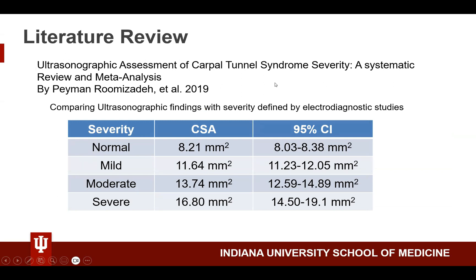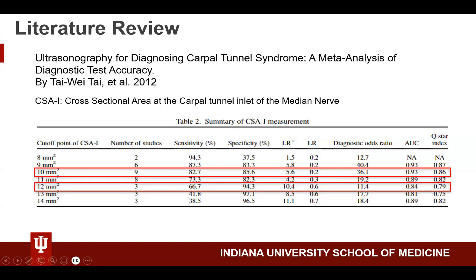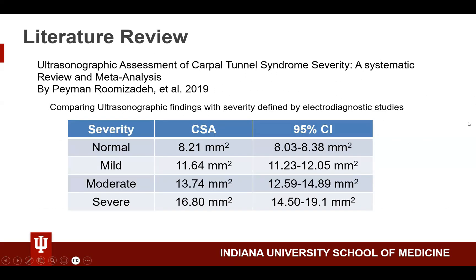A more recent literature review looked at how the cross-sectional area of the median nerve corresponded with severity as defined by electrodiagnostic studies — EMGs and nerve conduction studies. Mild cases have a cross-sectional area of around 11.64mm², while moderate and severe cases have larger cross-sectional areas. This further supports using cross-sectional area as a diagnostic finding, though 11.64mm² falls in the equivocal region, requiring clinical correlation.